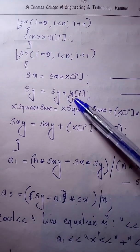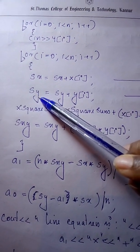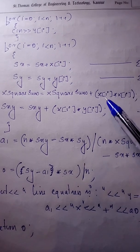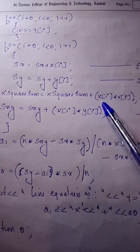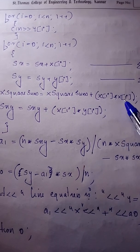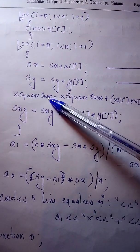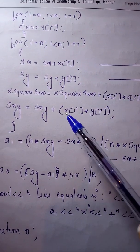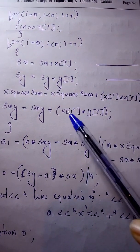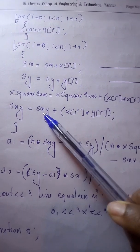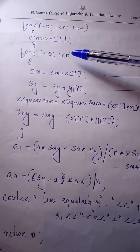Next, y[0], the first y term, is added with sy and the result is stored into sy. Then x[0] multiplied by x[0] is computed — the x term squared — and added to sx square sum; the result is stored into sx square sum. Then x[0] multiplied by y[0] is computed and added to sxy; the result is stored into sxy. Then the loop counter is incremented.